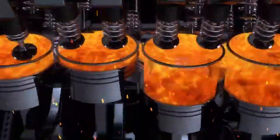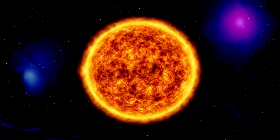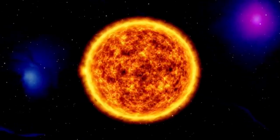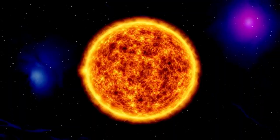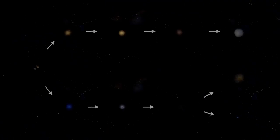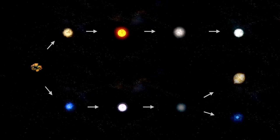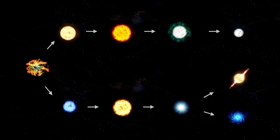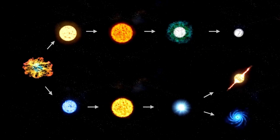Opposing this inward pull is the radiation pressure generated by nuclear fusion occurring within the star's core. Fusion reactions release tremendous amounts of energy, producing outward pressure that counters the force of gravity. This continuous push-and-pull relationship between gravity and radiation pressure defines the structure and behavior of stars, particularly massive ones like Betelgeuse.